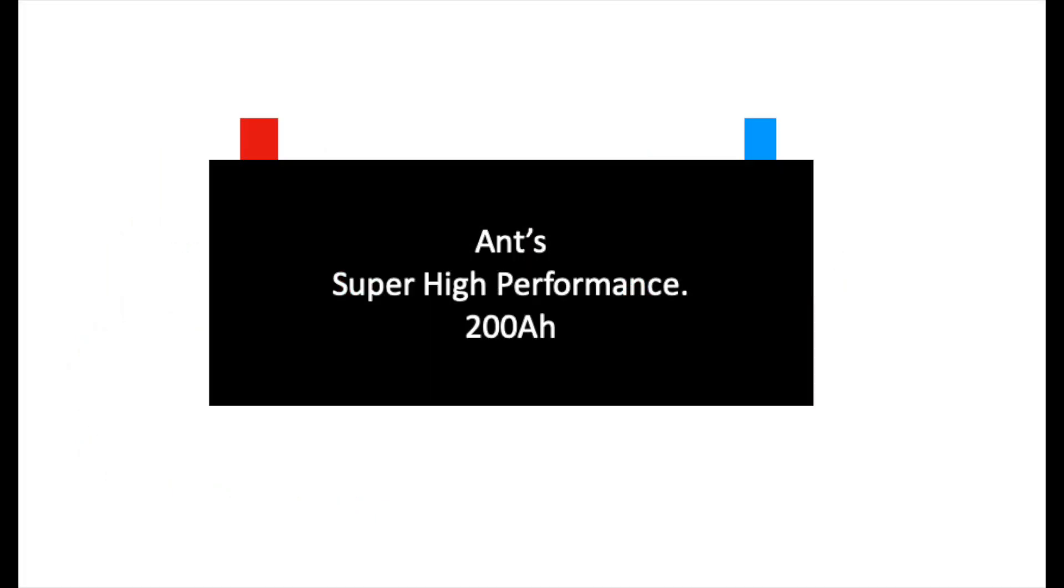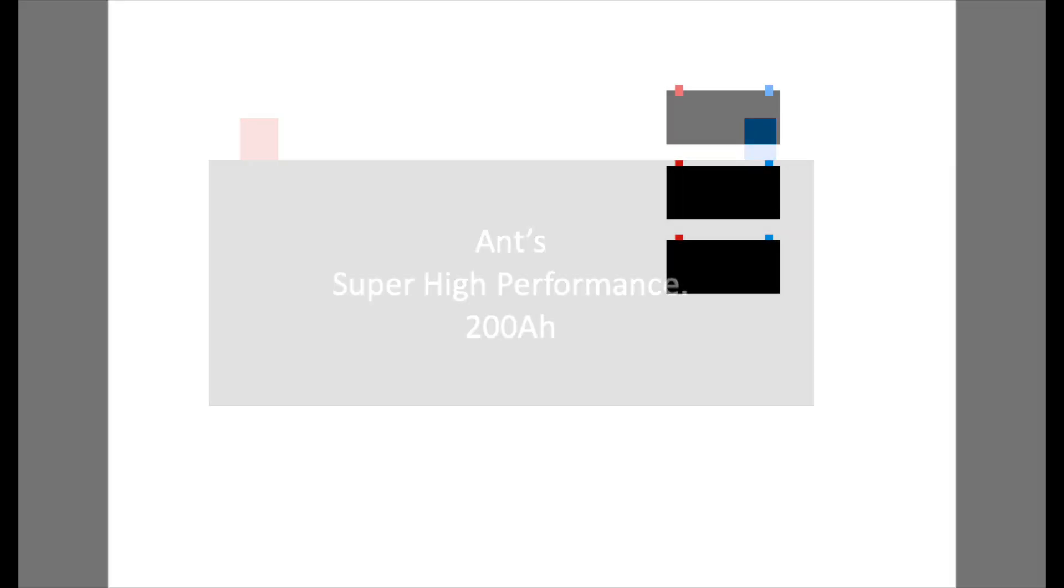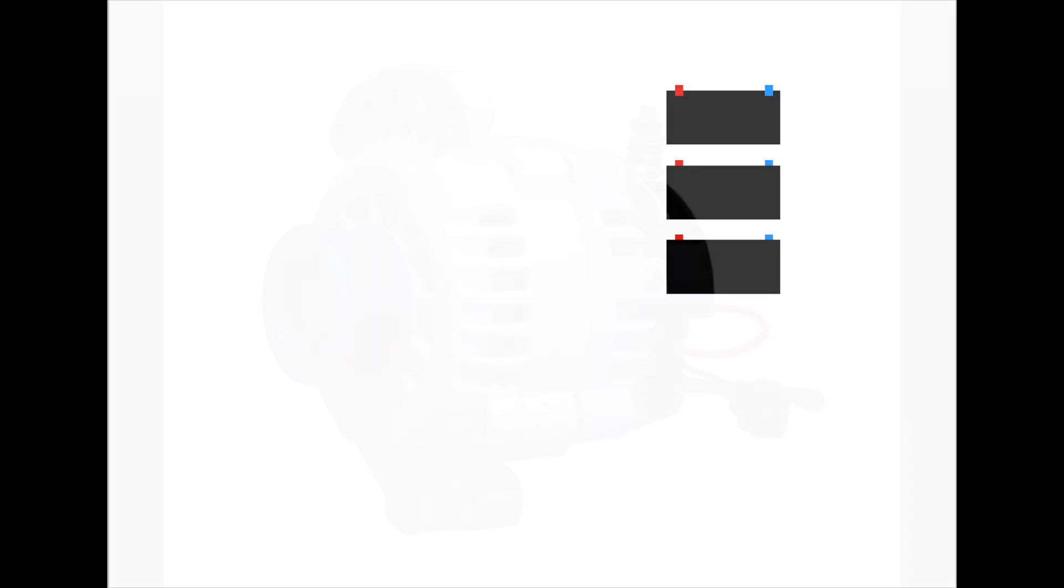Now, not all batteries are created equal. So for illustration purposes, I'm just going to refer to batteries generically. Of course, these ones will be Ant's super high performance 200 amp-hour batteries, but just for illustration. The average cruiser won't need as much battery life as perhaps a liveaboard. Most liveaboards will have three or four batteries, usually quite a large bank, somewhere between 400 and 600 amp-hours, depending on what type of battery they have.